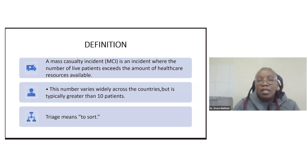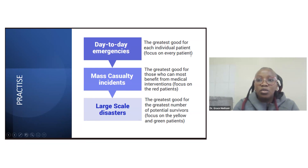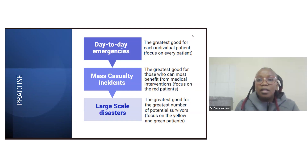Triage, as alluded to in earlier presentations, basically means to sort. For day-to-day emergencies, the aim of triage is to do good for each individual patient — the focus is on every patient who comes to your ED. But for a mass casualty incident, the aim is to do the greatest good for those who can most benefit from medical interventions, mostly focusing on your red patients — those who are emergent and need care here and now — so you can save as many people as possible.